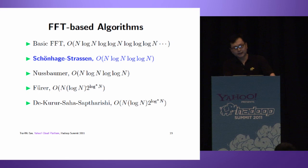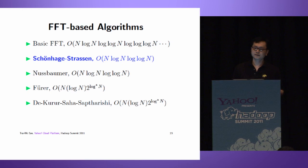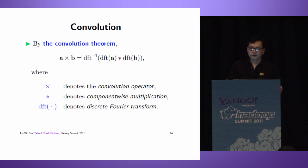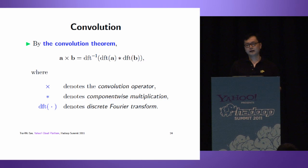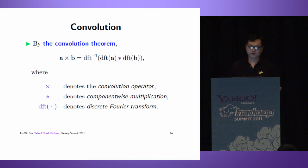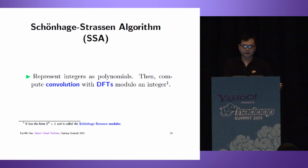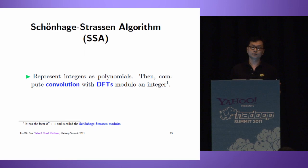In FFT-based algorithms, today we'll talk about Schönhage-Strassen. Running time is O(N log N log log N). The idea behind FFT-based algorithms is the convolution theorem - we can compute convolution with discrete Fourier transform and component-wise multiplication. Schönhage-Strassen represents integers as polynomials and computes convolution with DFTs. Computing convolution means we get the product of polynomials.